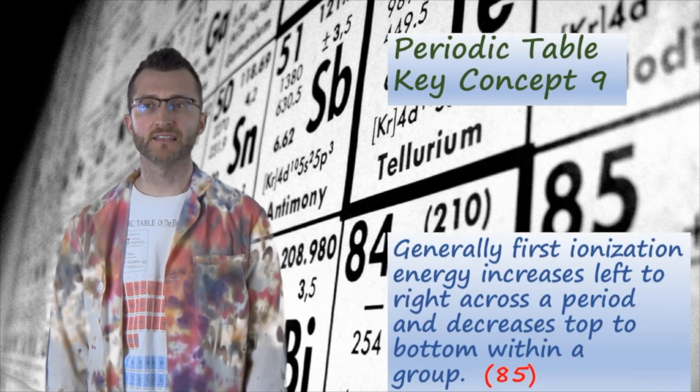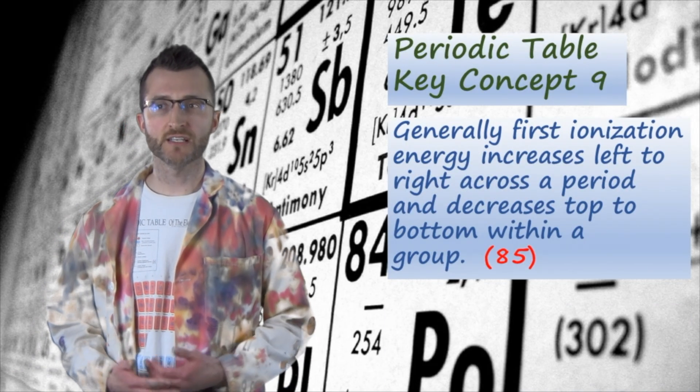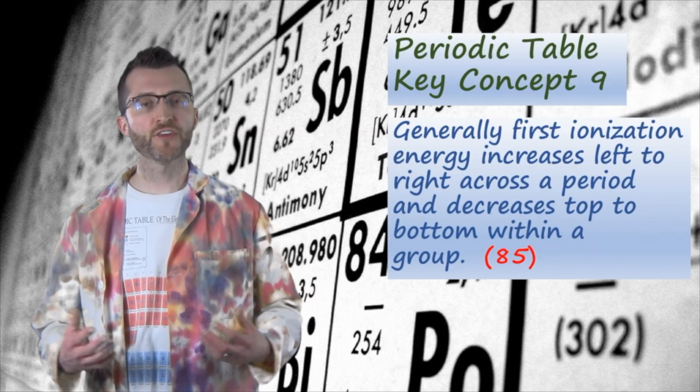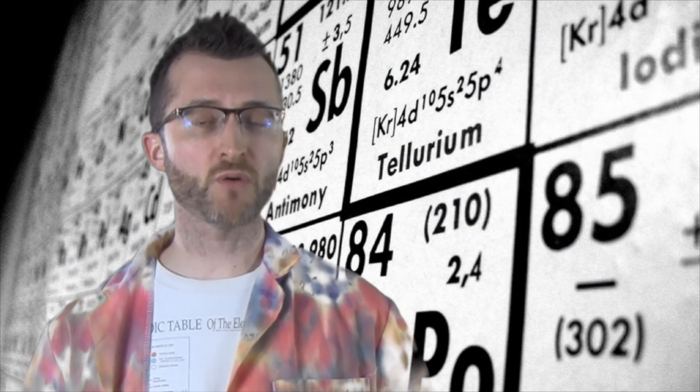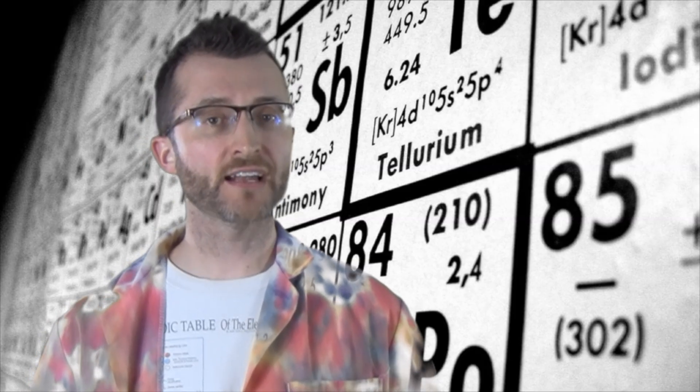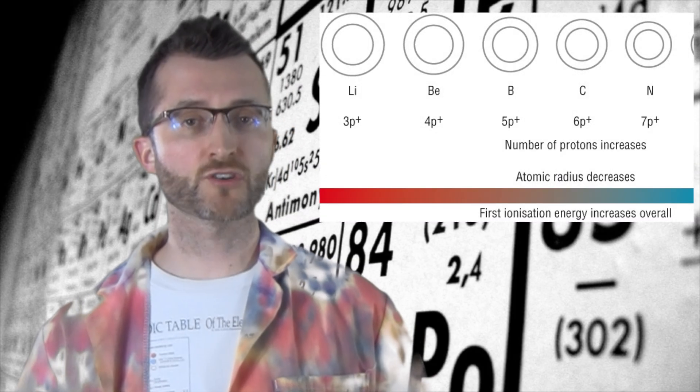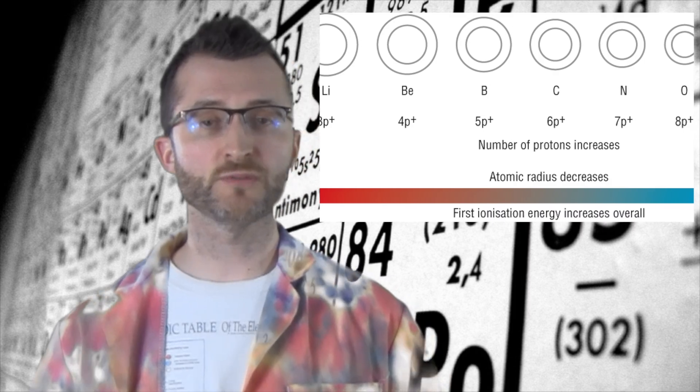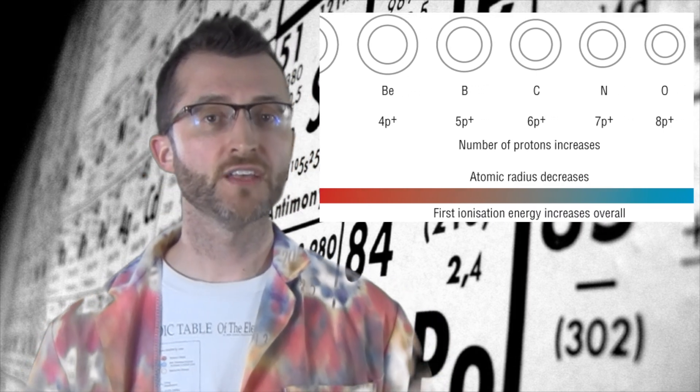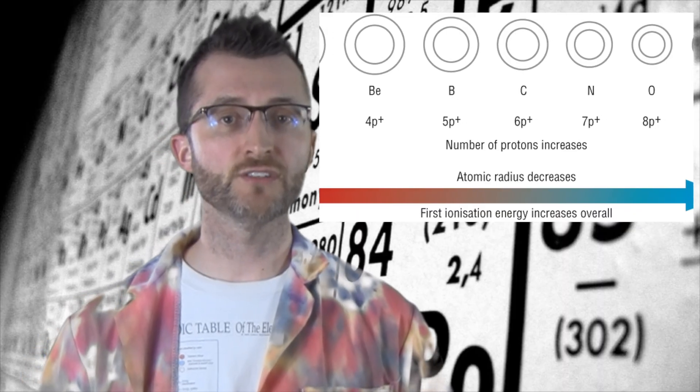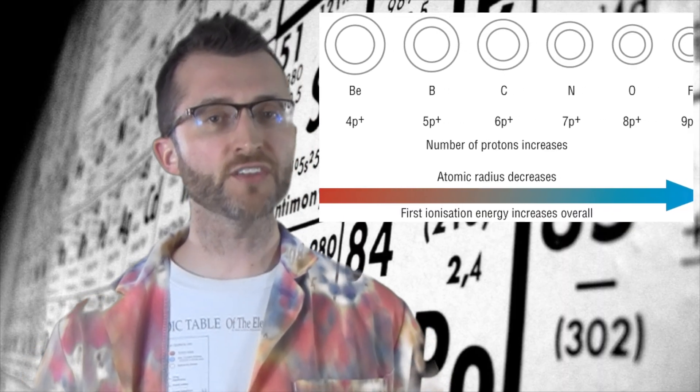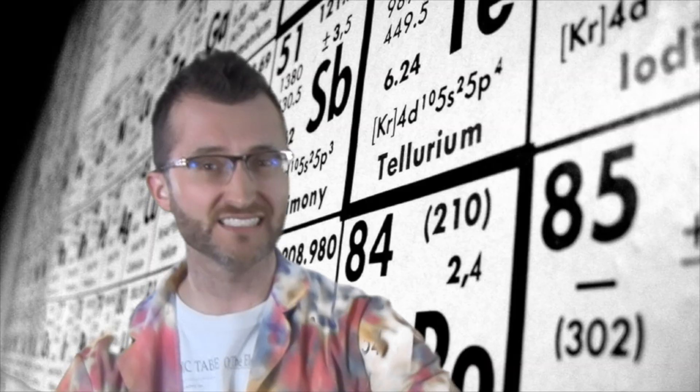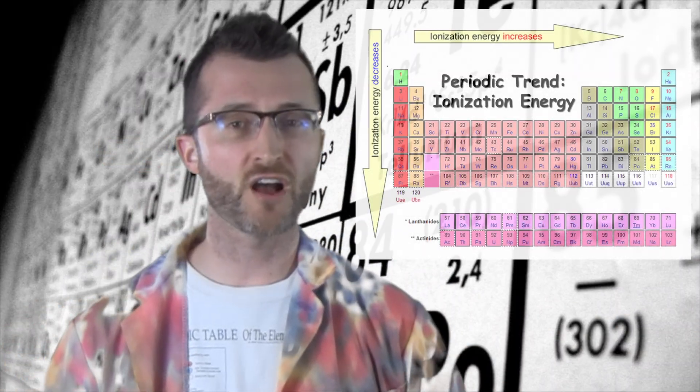Periodic Table Key Concept 9. Generally, first ionization energy increases left to right across a period and decreases top to bottom within a group. The first ionization energy is the energy required to remove the most loosely held electron. That electron would be a valence electron. Across a period, as Mr. Fu already explained, there is an increase in attractions between the nucleus and those outermost electrons. This is due to an increase in nuclear charge or number of protons. Because there are greater attractions across the period, it's going to take a lot of energy to remove that electron. It's really hard. I've got to add a lot of energy to remove that strongly attracted electron.